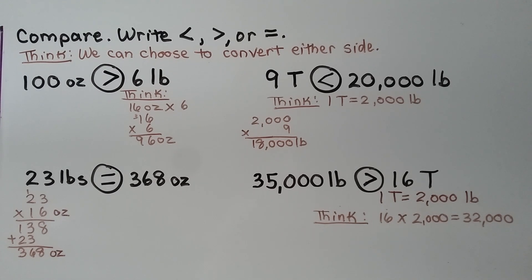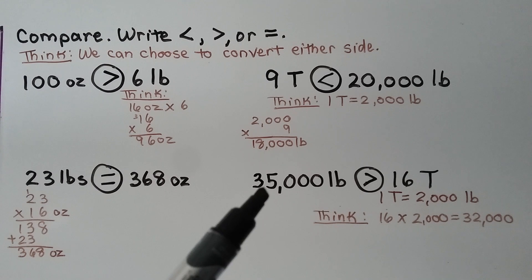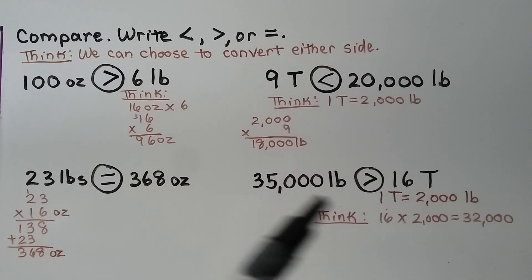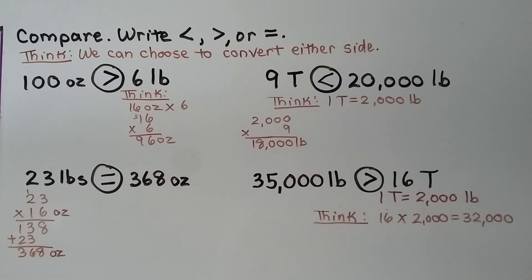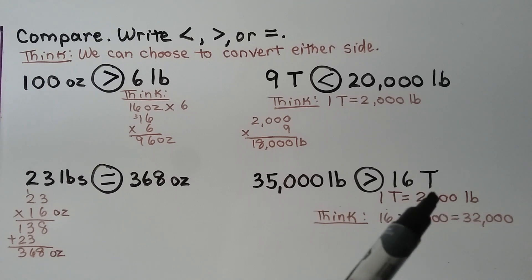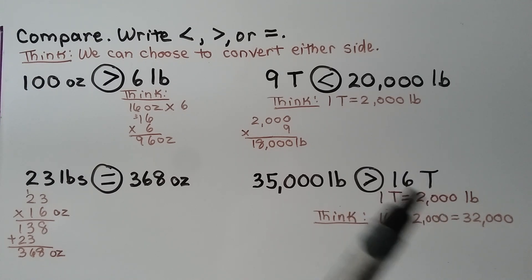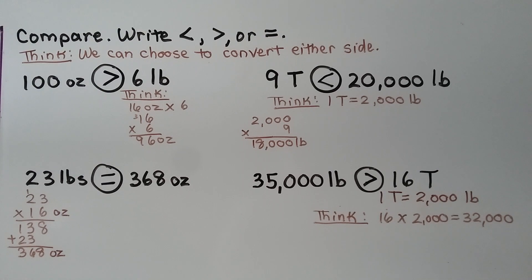Comparing thirty-five thousand pounds to sixteen tons: sixteen tons times two thousand pounds per ton equals thirty-two thousand pounds. So thirty-five thousand pounds is greater than sixteen tons. We could have divided thirty-five thousand by two thousand to compare, but multiplying by two thousand is easier here.